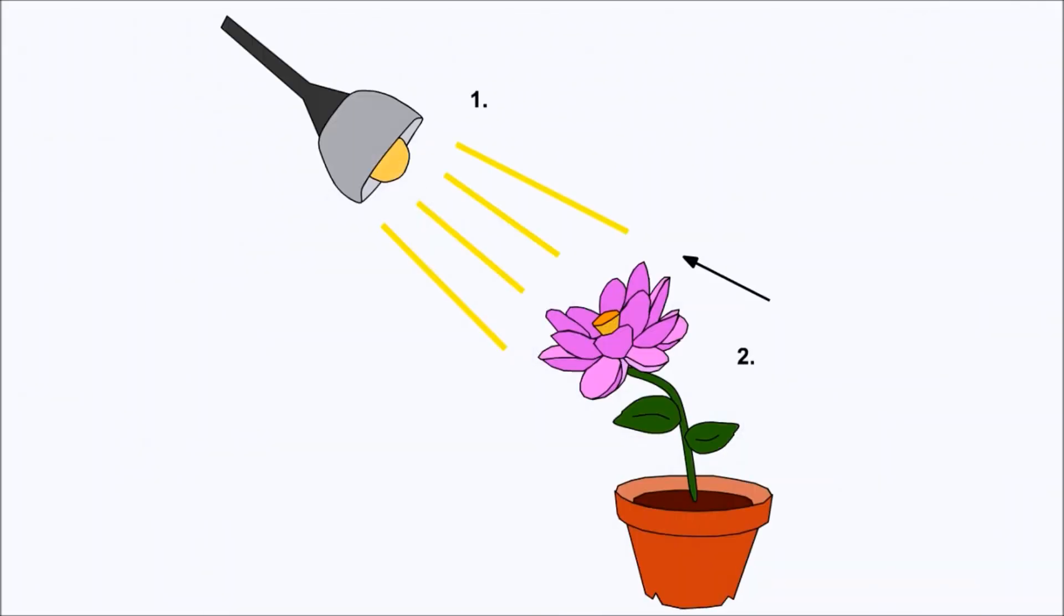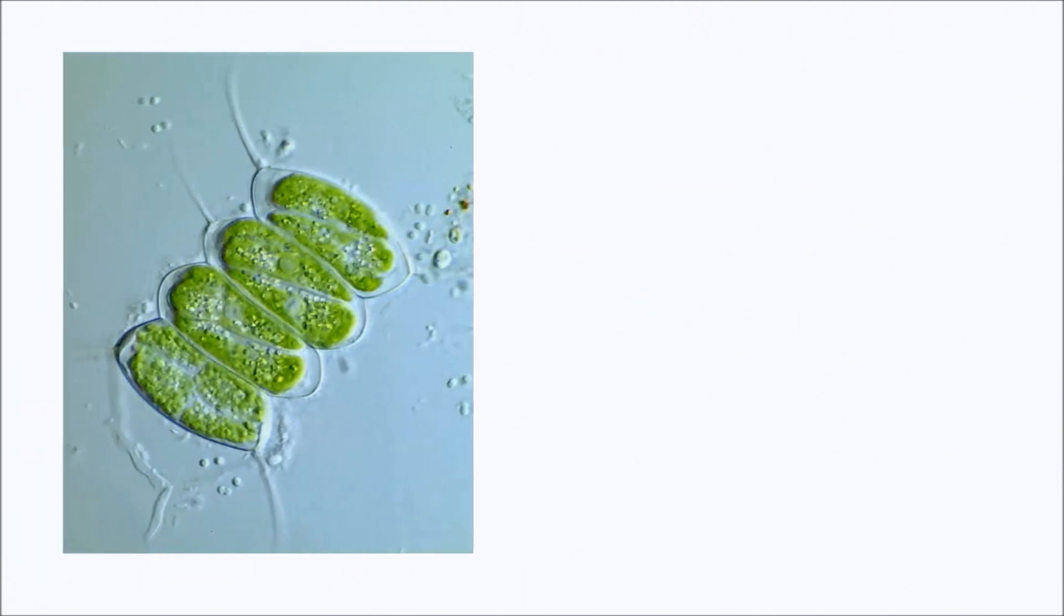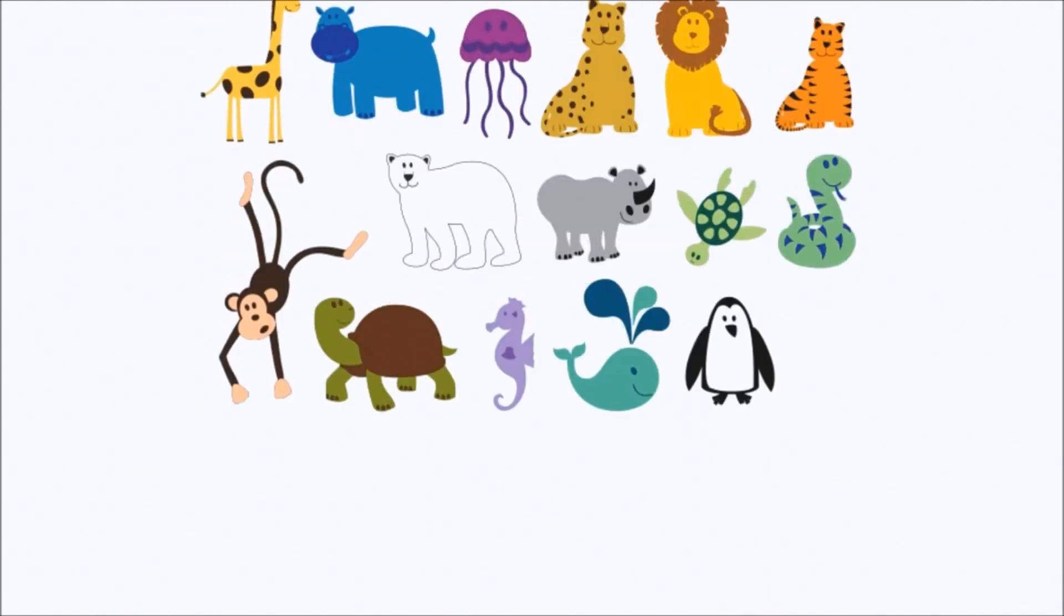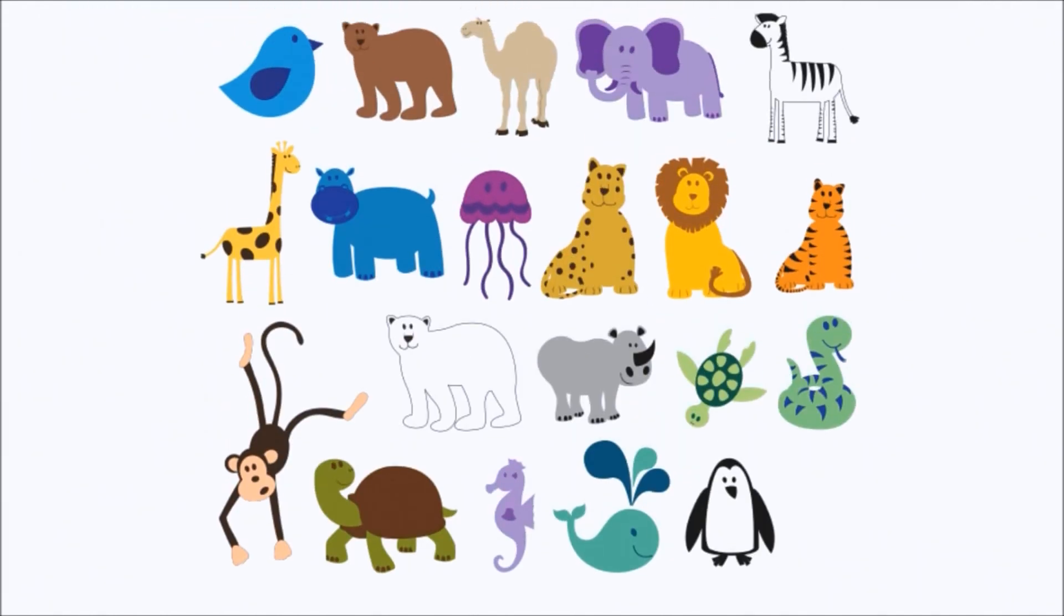Plants turn their leaves toward the sun. Single-celled algae, protists, and other microbes swim toward or away from light. But it is the animals with image-forming eyes that have taken light detection to the next level.